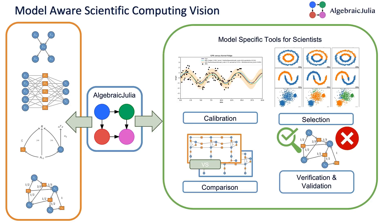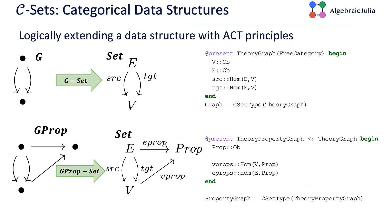We always have this graph structure with additional information. The goal of AlgebraicJulia is to connect all the modeling frameworks with all the modeling tasks to build model-specific tools for the scientists—be that calibration, selection, comparison, verification, validation. Instead of writing all pairs for all modeling frameworks for all modeling tasks, we want to be able to factor that through a common set of software abstractions that live in AlgebraicJulia. We can minimize the amount of code we have to write.